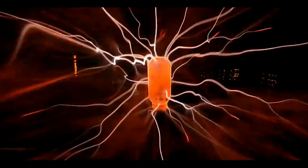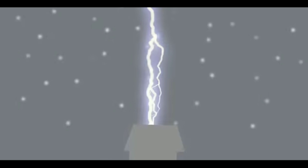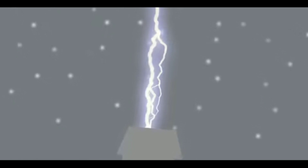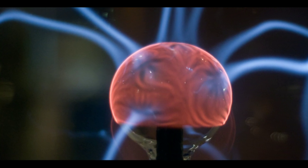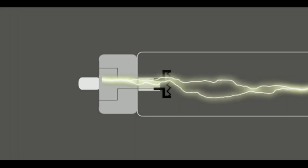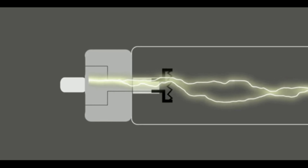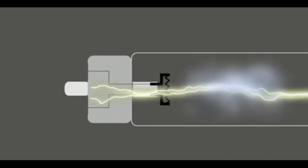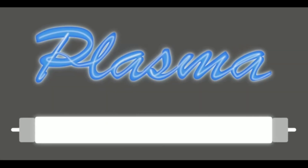If you look at the stars in the sky, you can see plasma at work. Lightning is also plasma. We also have plasma in everyday items like tube lights and fluorescent bulbs. Plasma also appears in heat and ions.